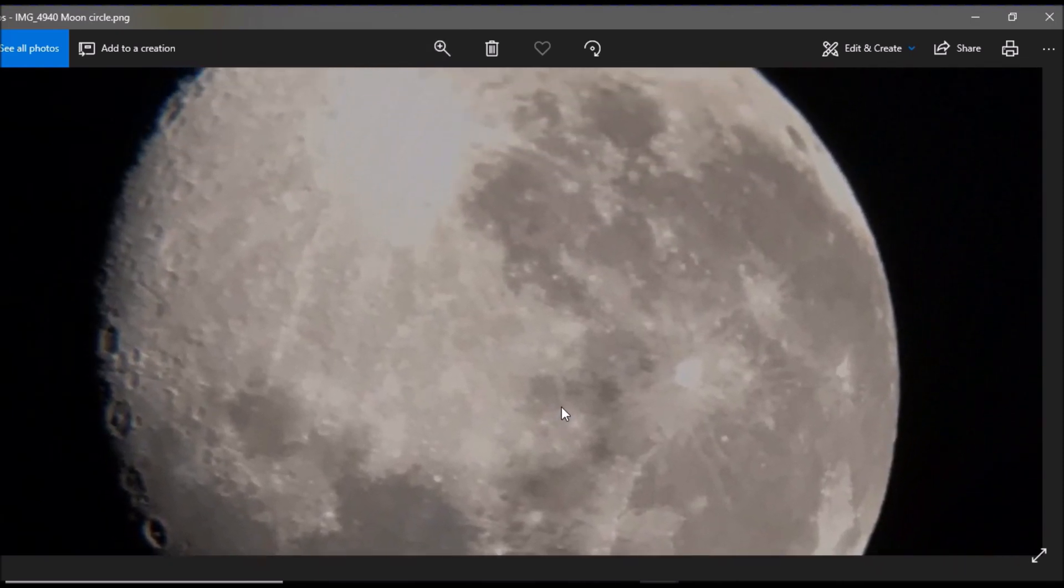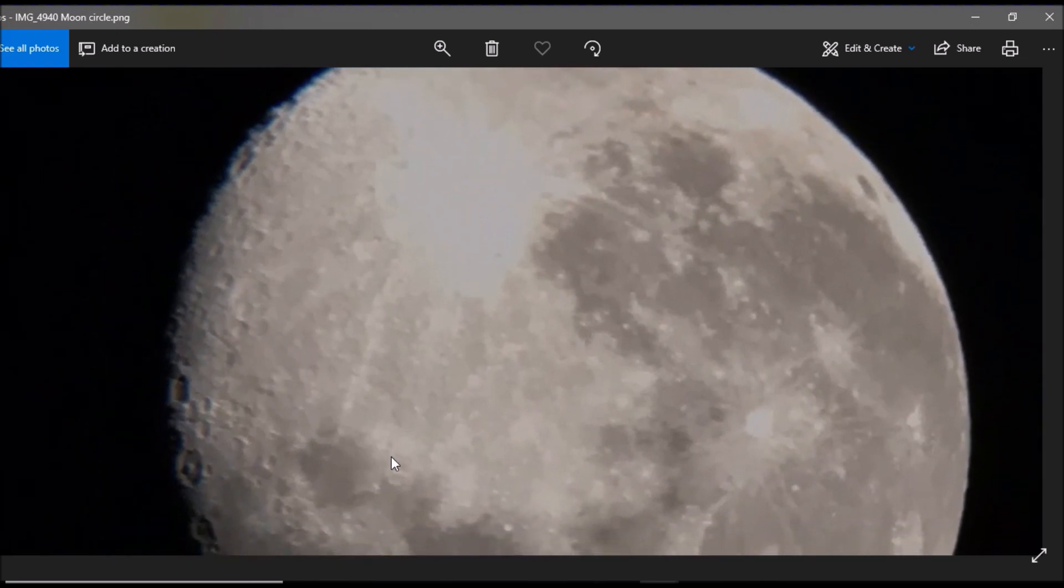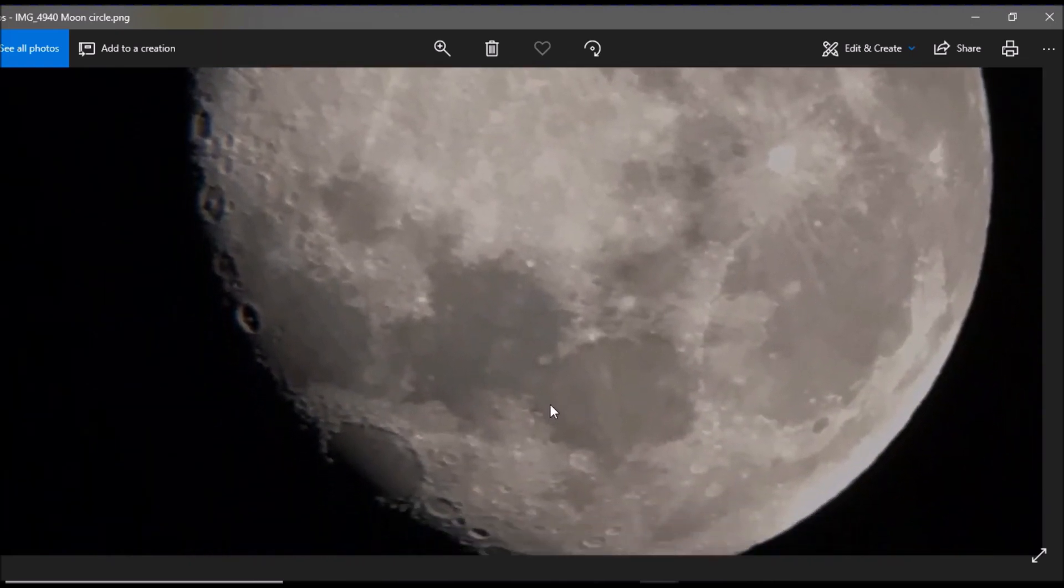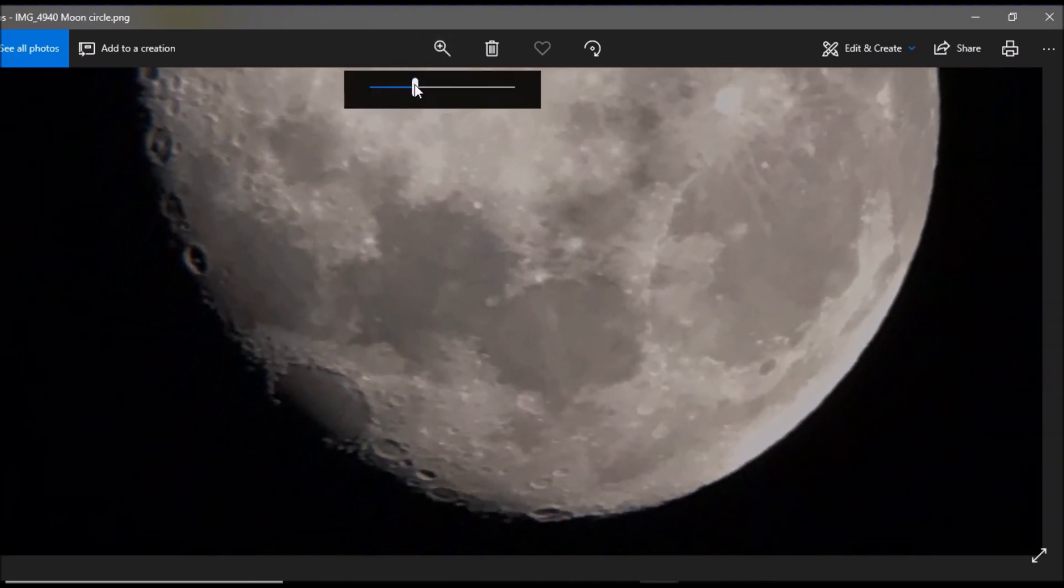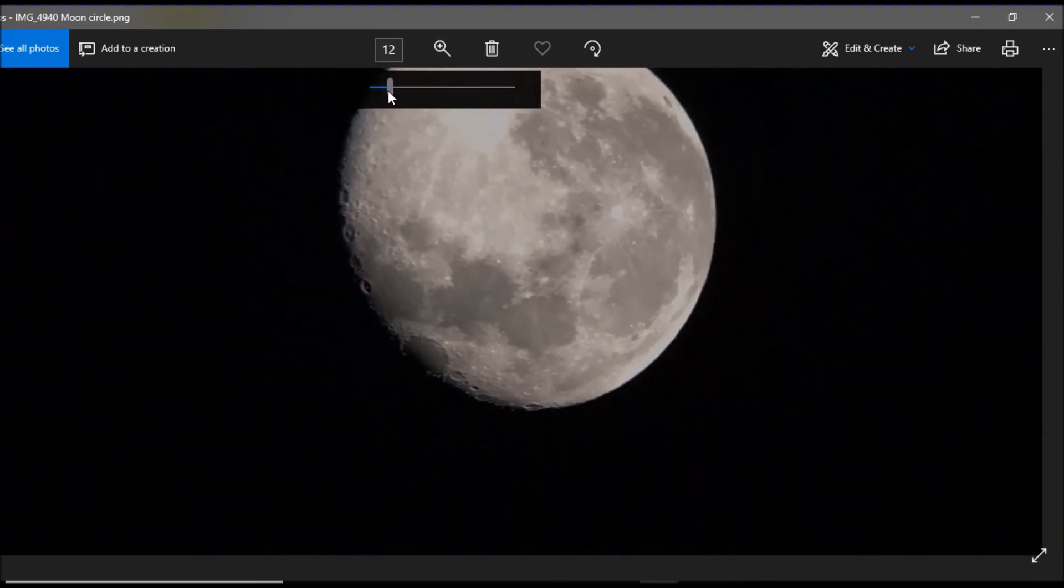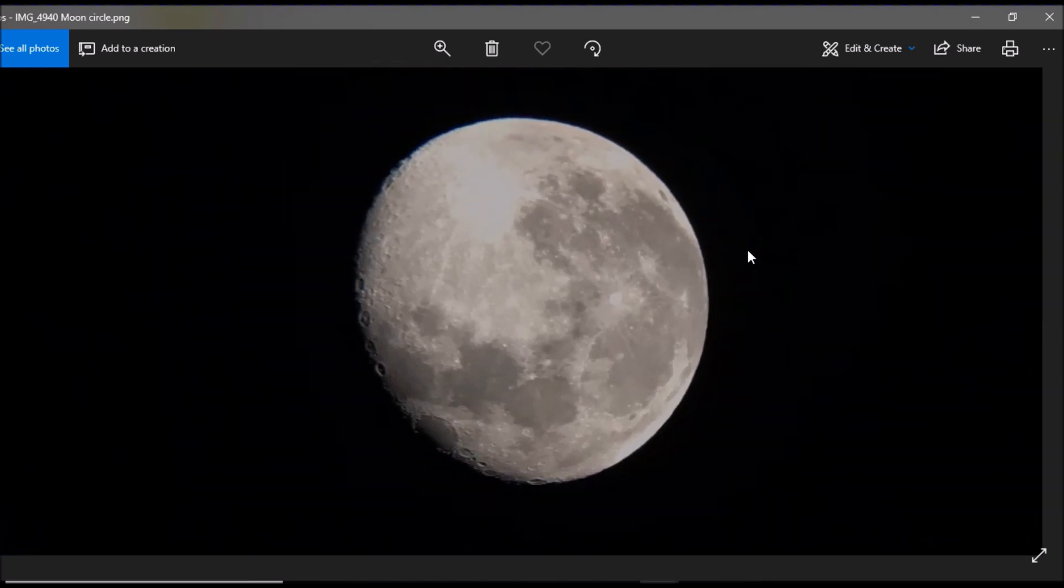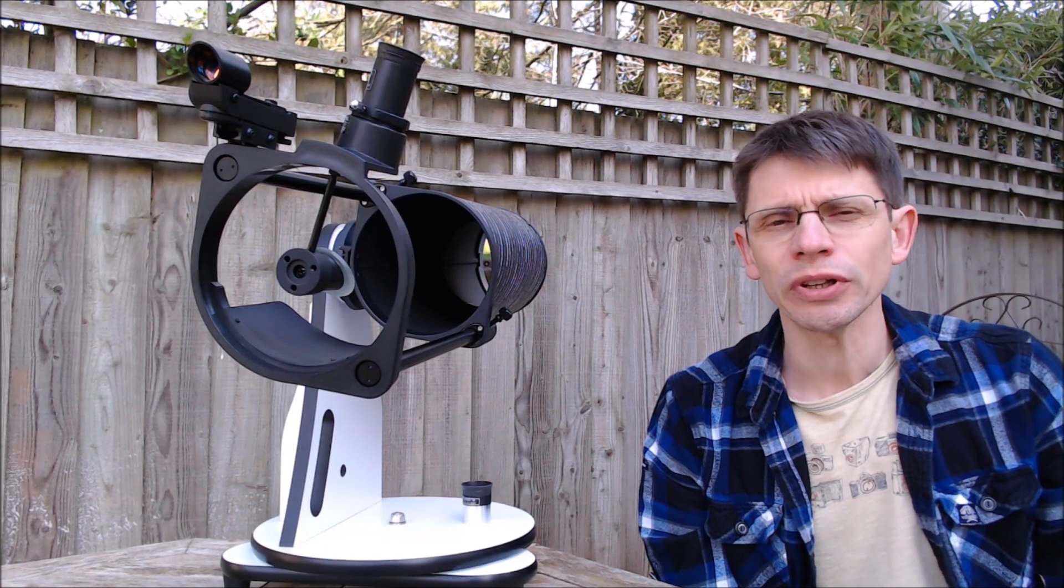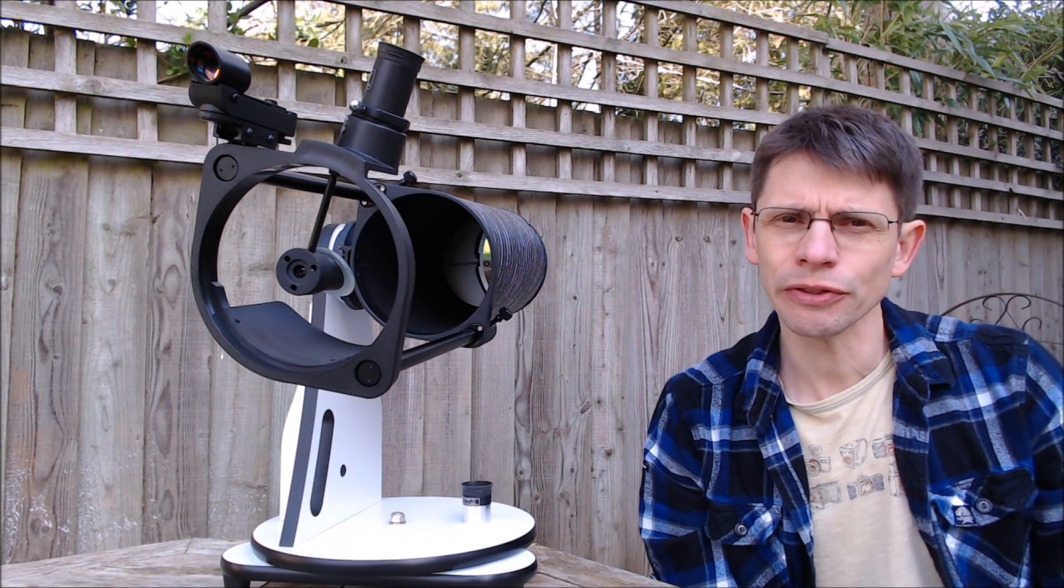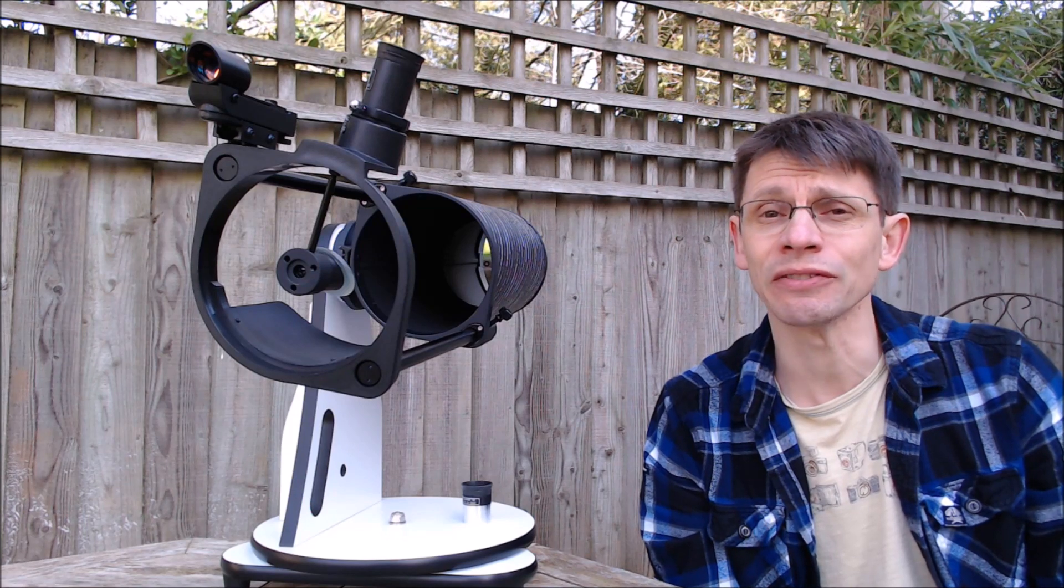And really nice detail. You can obviously play around, adjust the exposure, perhaps get a slightly clearer view of some of the other features. But very pleased with this. This is really excellent quality and shows you why the moon and the bright planets are going to be really good targets for this telescope. So taking all that on board, I'd say that this 130 millimeter telescope, the overall image quality is very good. I'm going to give it 8 out of 10.